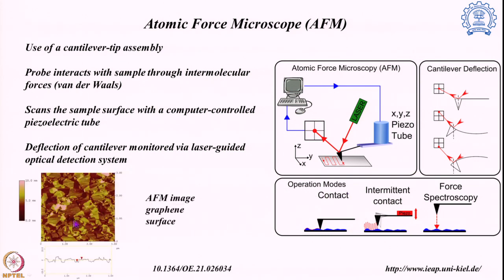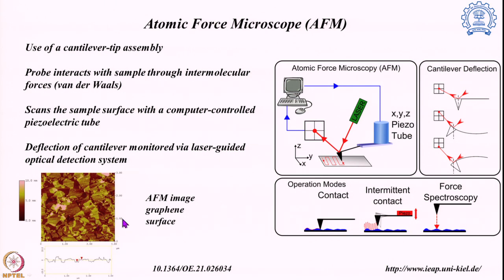Here I am showing an AFM image of a graphene surface, which shows the different topography and the distances across the sample and their distribution. This particular graph shows how the tip has been moved, as detected by the optical detection system, and the image is created from the movement of the tip. That is how the AFM image is created.